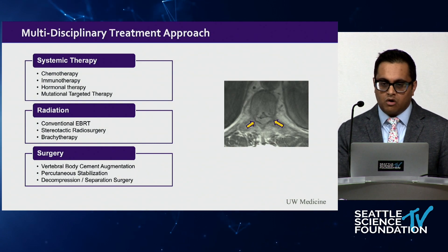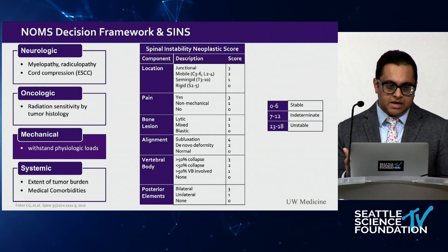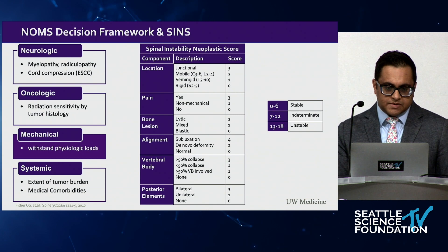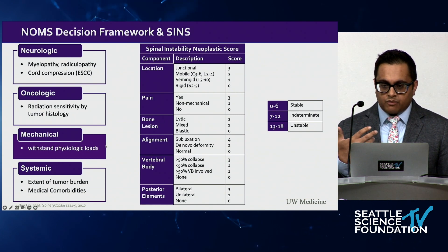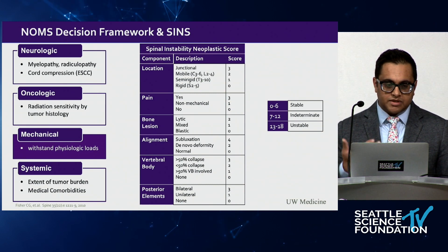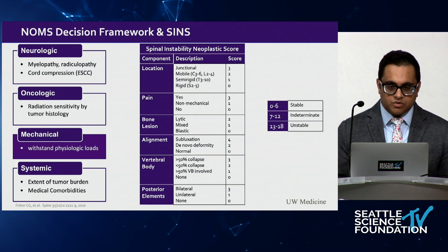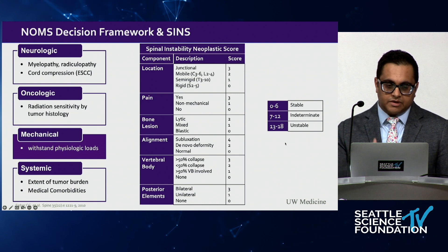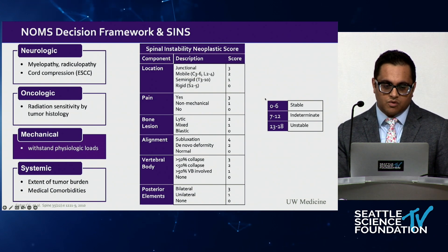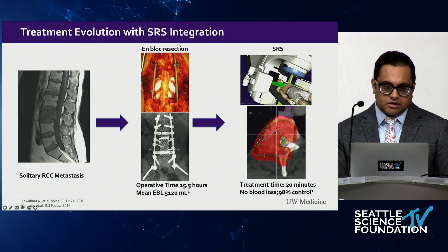You may have heard of the NOMS decision framework. Specifically we'll be looking at the mechanical component: when a patient has a spinal fracture, can they withstand physiological load, and do they have biomechanical pain? If so, we typically fuse or fixate these patients. We use the Spinal Instability Neoplastic Score to figure out how relatively unstable their fracture is.